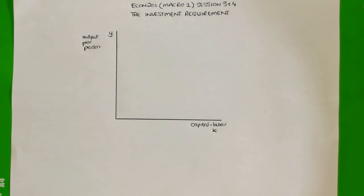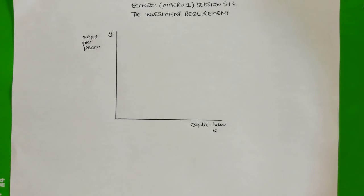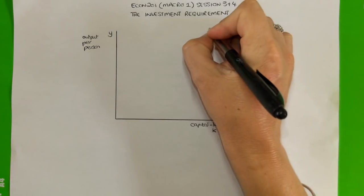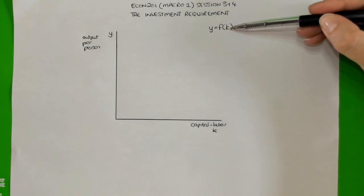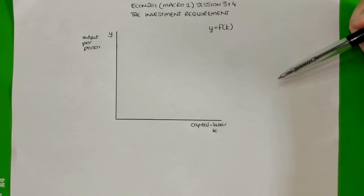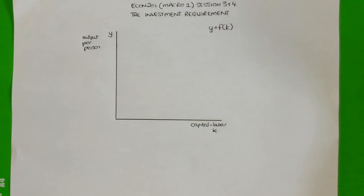The investment requirement is a very important component of neoclassical growth theory. What we're aiming to show is how an economy can go about increasing the amount of output per person. One of the ways in which an economy can increase output per person is if that economy was investing in more capital stock per person. It's through the investment in capital stock per person that output per person can increase — that is what our production function in mathematical notation was showing us: if we increase the amount of capital stock per person, we're able to increase the amount of output per person.